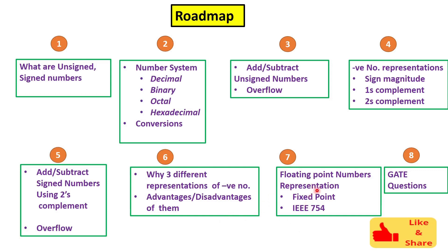We will also discuss why there are three different representations for negative numbers and the advantages and disadvantages of each approach. Finally, we will discuss different representation techniques for floating point numbers — for example 0.89 or 1.873 — including fixed point representation and IEEE 754 representation. IEEE 754 is very important as it is asked in many competitive exams like GATE and UGCnet. We will take many examples, mostly GATE and UGCnet questions, to understand all these concepts better.